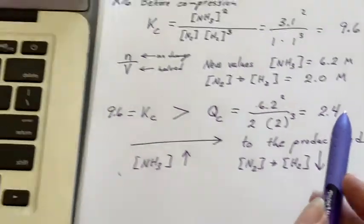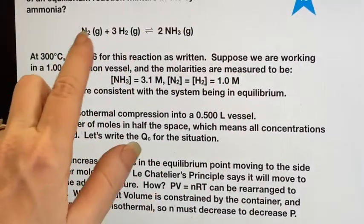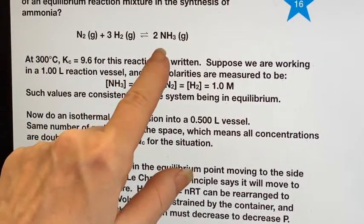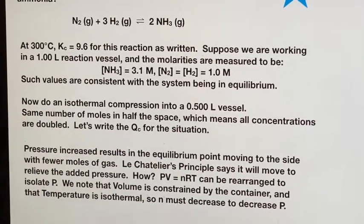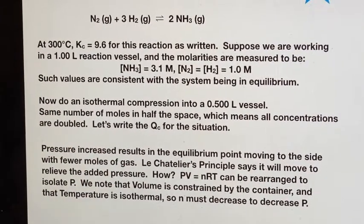I just want you to notice that all of that is because there is a change in delta n. Delta n on this side is 1 plus 3 equals 4 moles of gas. On this side, there's only 2 moles of gas. So if you compress it so that the pressure goes up, it's going to shift to the side that has less gas.